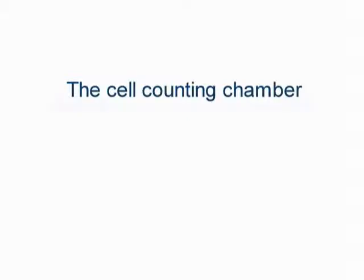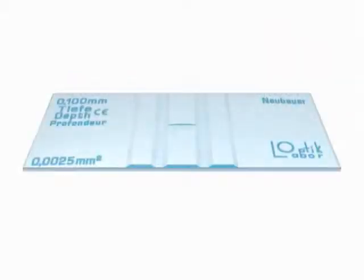The cell counting chamber. Here the Neubauer chamber is explained as an example. To prepare for cell counting, the central area is covered with a glass slip. Two chambers with a predefined depth of 0.1 mm are created.